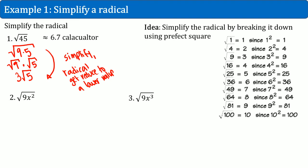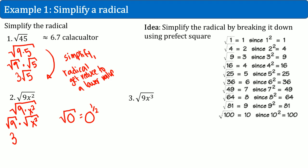Let's do example 2. Same process — we want to split this into two parts. So the square root of 9x squared is just the square root of 9 times the square root of x squared. Square root of 9 is just 3. Then we have to understand what the square root of x squared is. We know the radical is equal to the one half exponent. So the square root of x squared is x squared divided by 2, which just becomes x to the 1, so this just becomes x. The result is 3x.